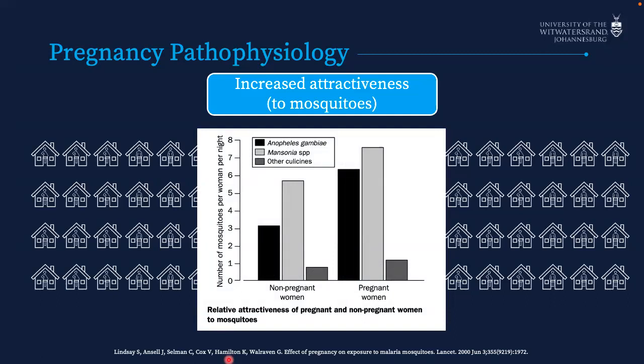The study also showed that pregnant women exhale about 21% more breath than non-pregnant women — probably attracting mosquitoes through moist convection currents, host odors, and different chemicals in breath. Additionally, pregnant women are 0.7 degrees warmer than non-pregnant women, which they also demonstrated.